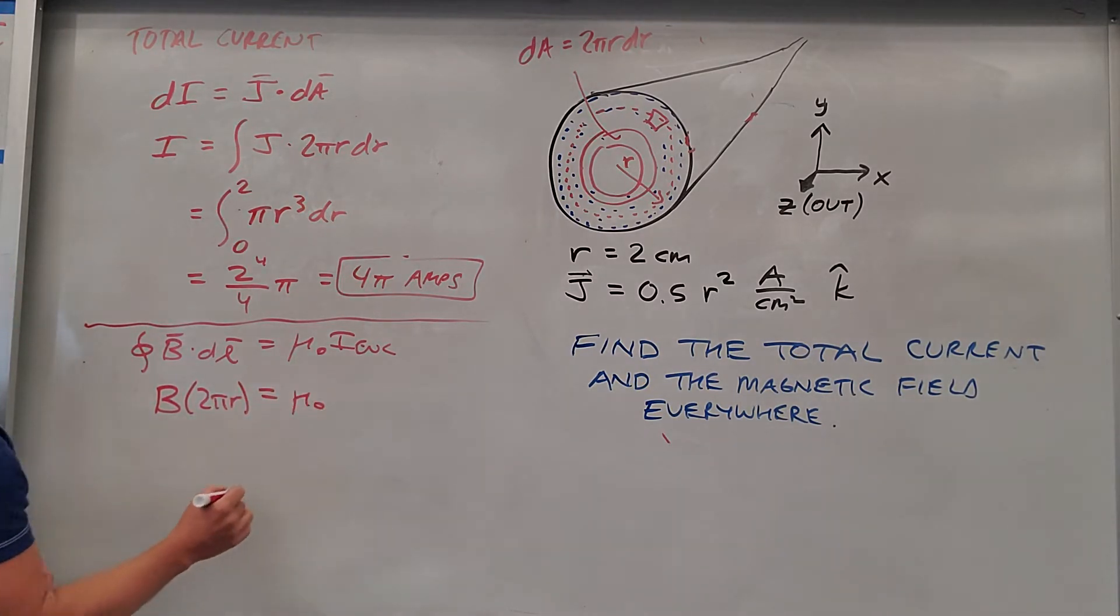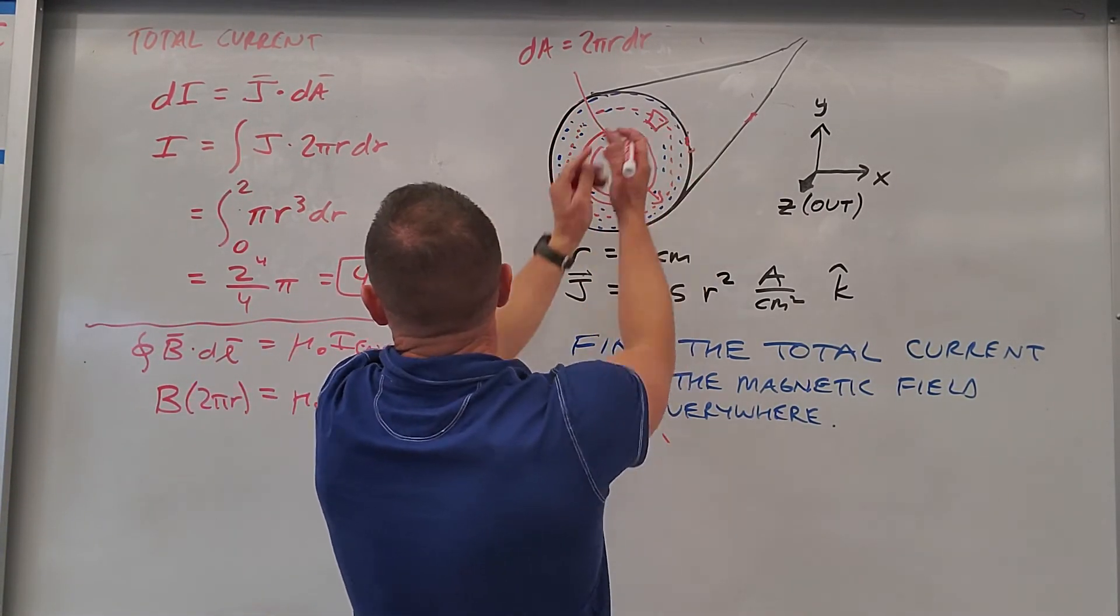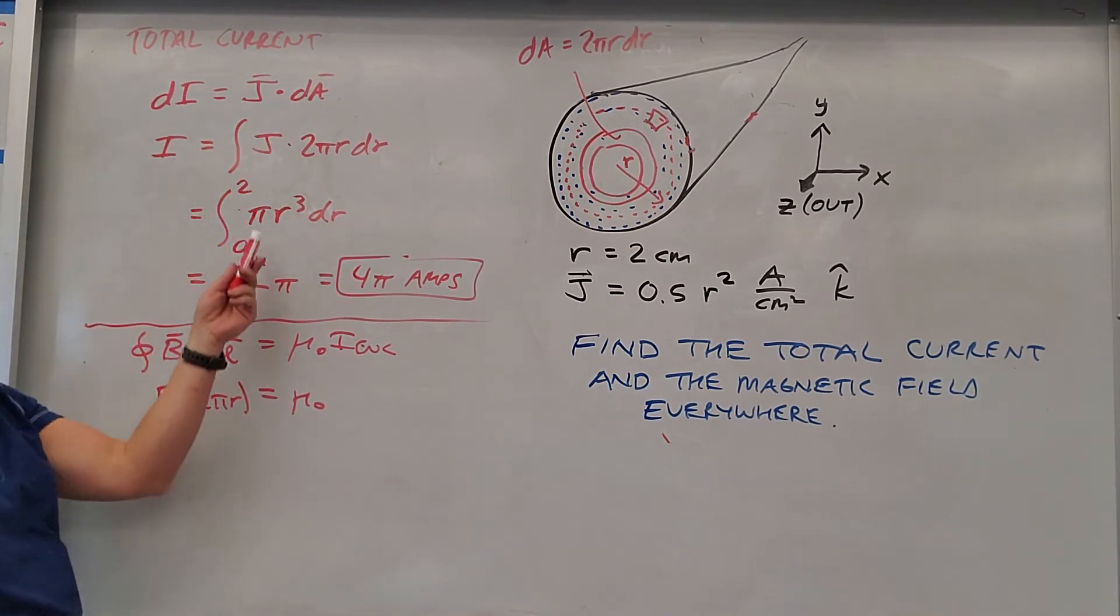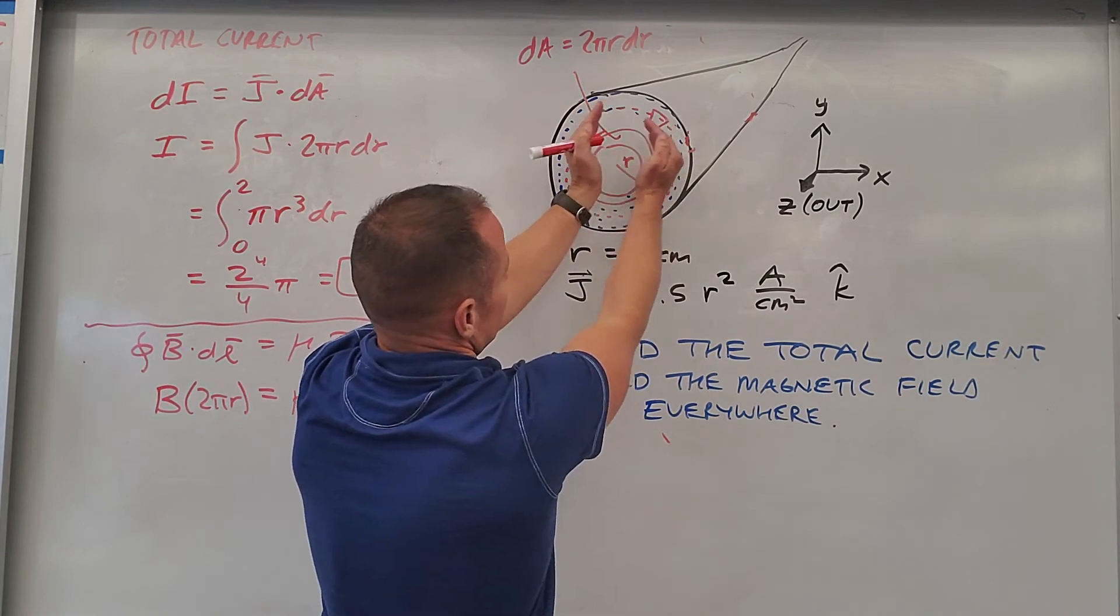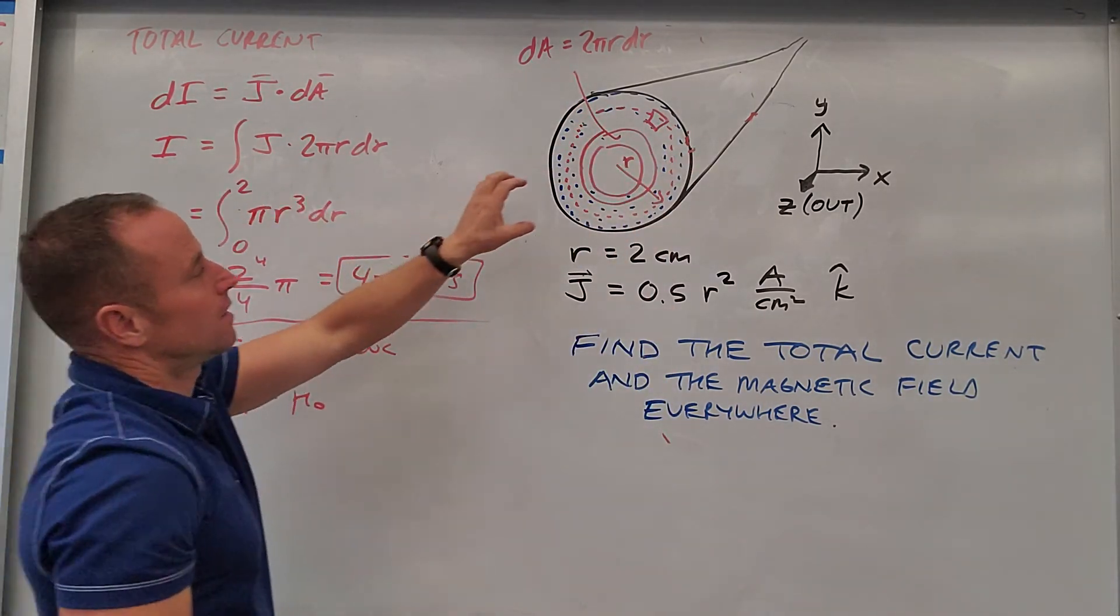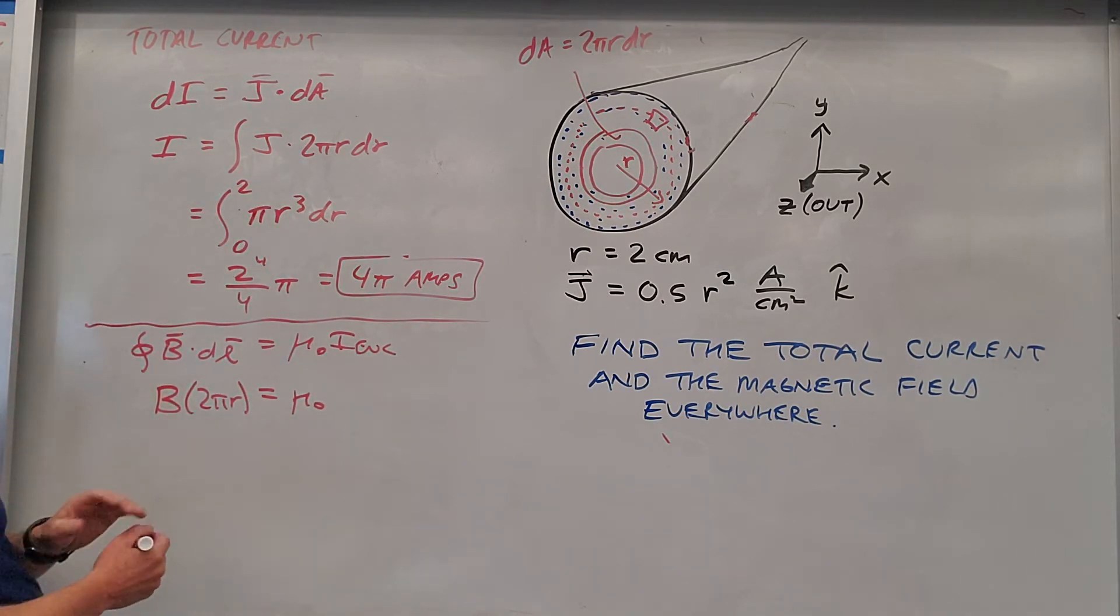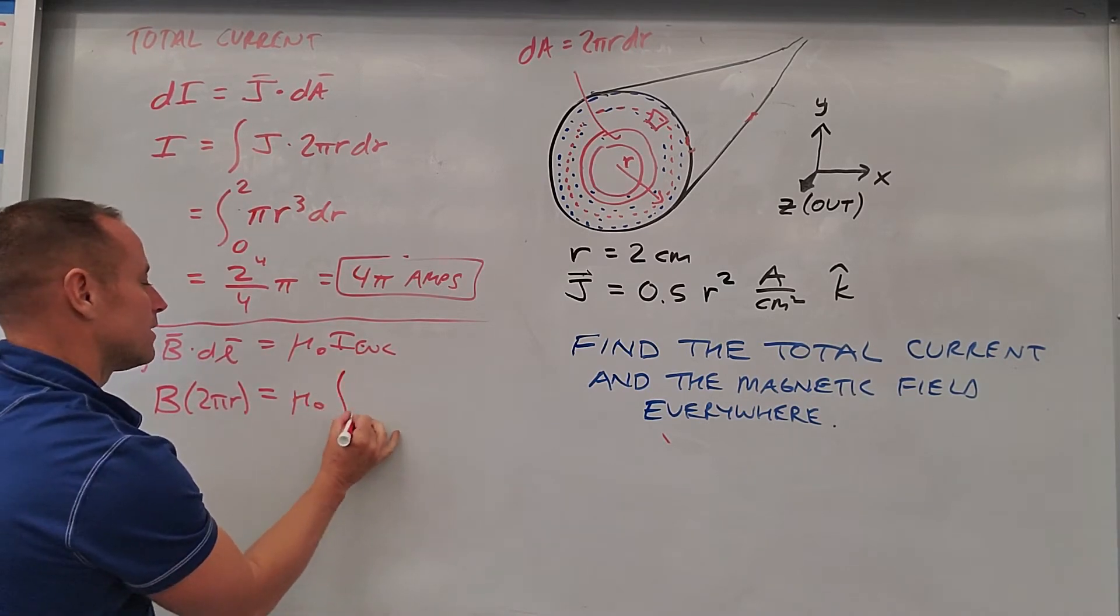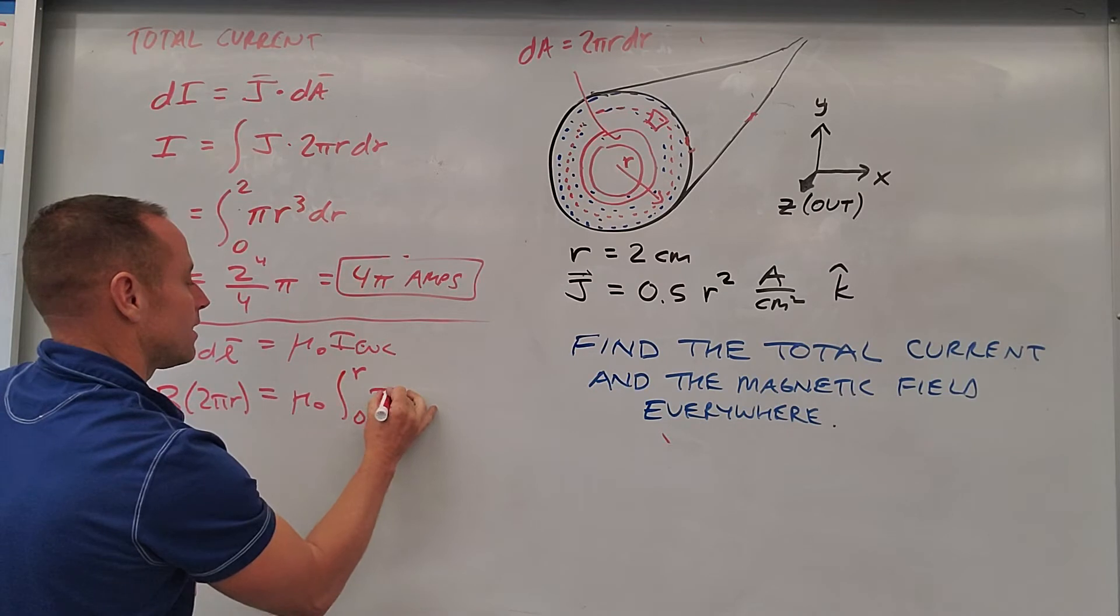Where the labor usually comes in is in finding the enclosed current. So we have to figure out how much current is inside there, inside of this thing. Well, it's really similar to what we did before. It's just that instead of getting the entire thing, we just want to know how much is inside an arbitrary circle radius R. So instead of going 0 to 2, we're just going to go 0 to R. So it'll be mu naught, and then we can just cheat off the work we did before. This will be 0 to R of pi R cubed D R.